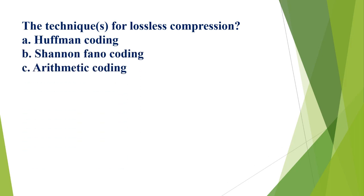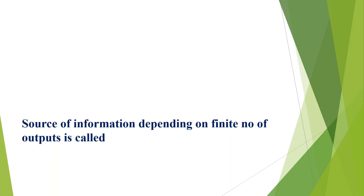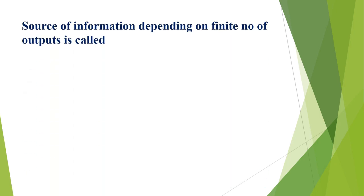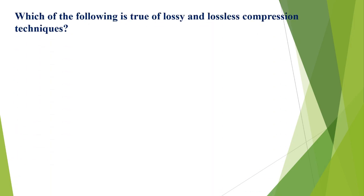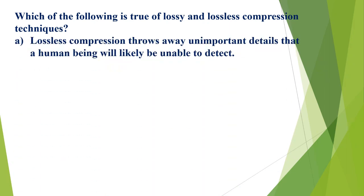The techniques for lossless compression are: A) Huffman coding, B) Shannon-Fano, C) arithmetic, D) all of the above. The correct option is D, all of the above. A source of information depending on a finite number of outputs is called: A) Markov, B) finite memory source, C) zero source, D) both A and B. The correct option is D, both A and B.